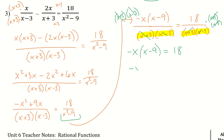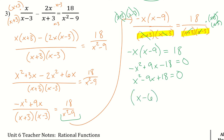So I have negative x squared plus 9x minus 18 equals 0. I don't want the negative out front, so I multiply through to get x squared minus 9x plus 18 equals 0. Factoring gives x minus 6 and x minus 3. Multiplying those gives positive 18 and adding gives negative 9, so my x values are 6 and 3.